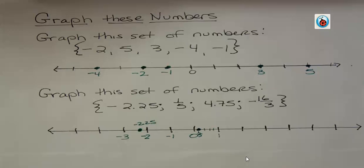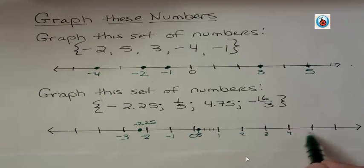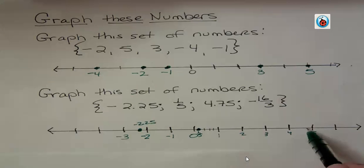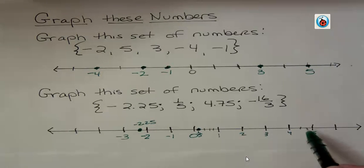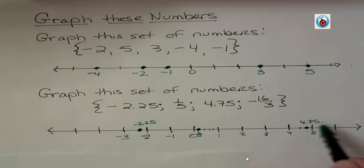4.75. Well, two, three, four, five. 4.75 has a greater absolute value than four, so it's further away from zero — not all the way over to five, but halfway between four and five is 4.5, and halfway between that and five is 0.75 past four. That would be 4.75.